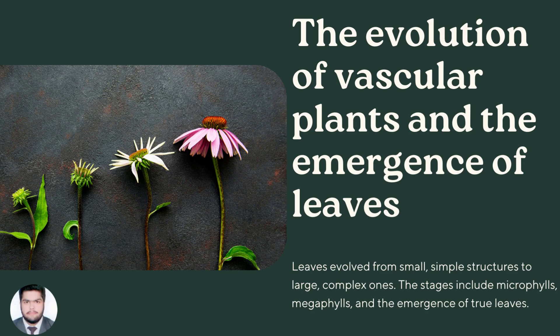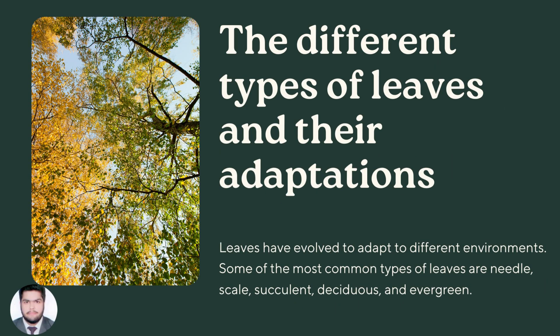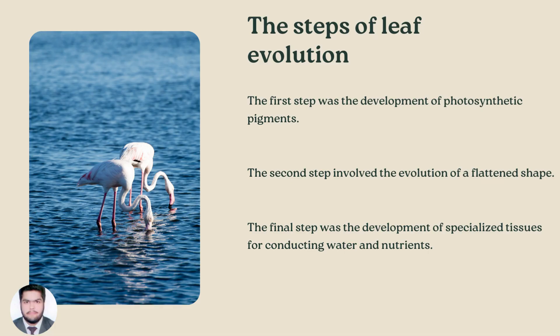Leaves evolved from small simple structures to large complex ones, including microphylls, megaphylls, and the emergence of true leaves. Leaves have evolved to adapt to different environments. Some of the most common types of leaves are needle, scale, succulent, deciduous, and evergreen.